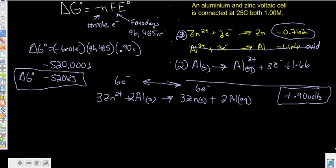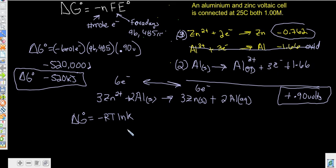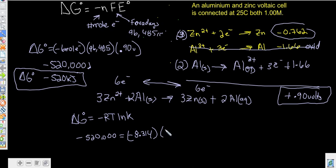We can go a little further and find an equilibrium constant for this equation. To do that, remember ΔG equals negative R times temperature times the natural log of the equilibrium constant K. Since we have our ΔG, we can solve this equation. So we have negative 520,000 joules — keeping it in joules because the R constant uses joules — equals negative 8.314 times our temperature of 298 Kelvin times the natural log of K.